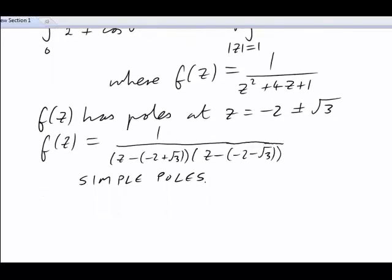We're only interested in the simple pole at minus two plus root three. That's the one that's inside the contour. It's inside mod z equals one.